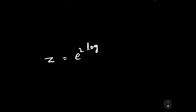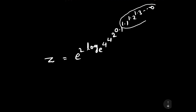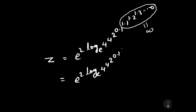Now let us solve the question. z equals e to the power 2 log e base 4, to the power 4, to the power 2, to the power 0.1, to the power 1.1, to the power 1.2, to the power 1.3, and so on till infinity. Observing this, we can say that the value of 1.1 to the power 1.2 to the power 1.3 and so on till infinity will be equal to infinity.